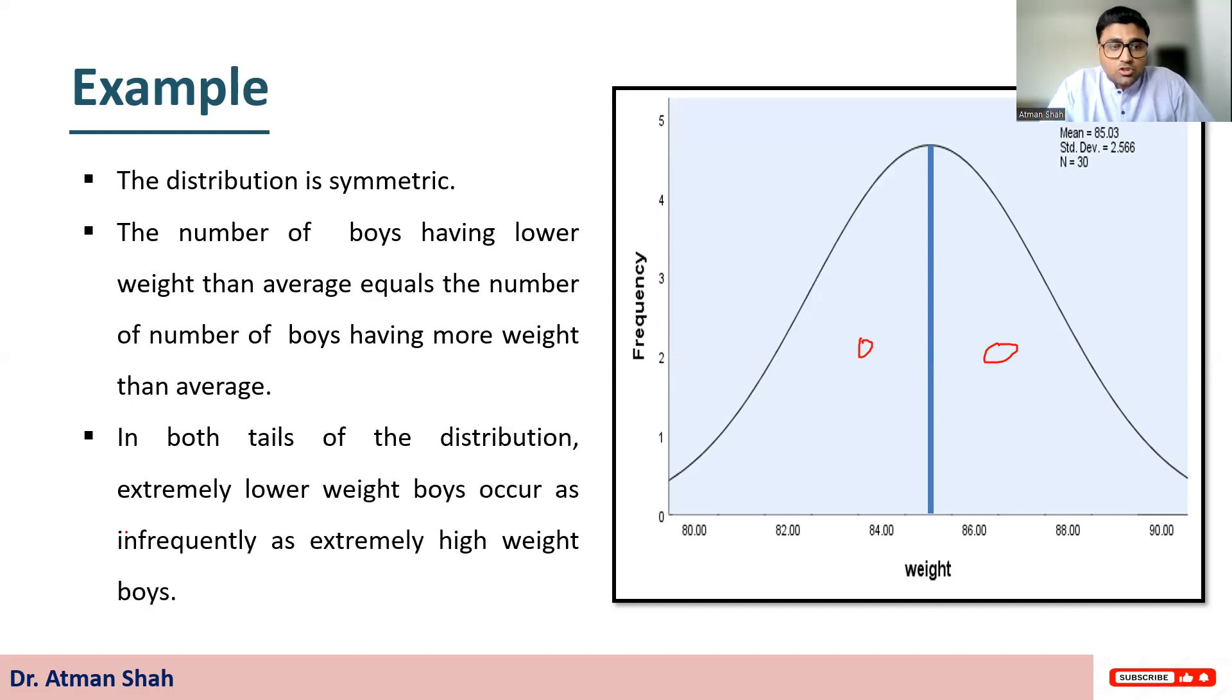In both tails of the distribution, extremely lower weight boys occur as infrequently as extremely high weight boys.